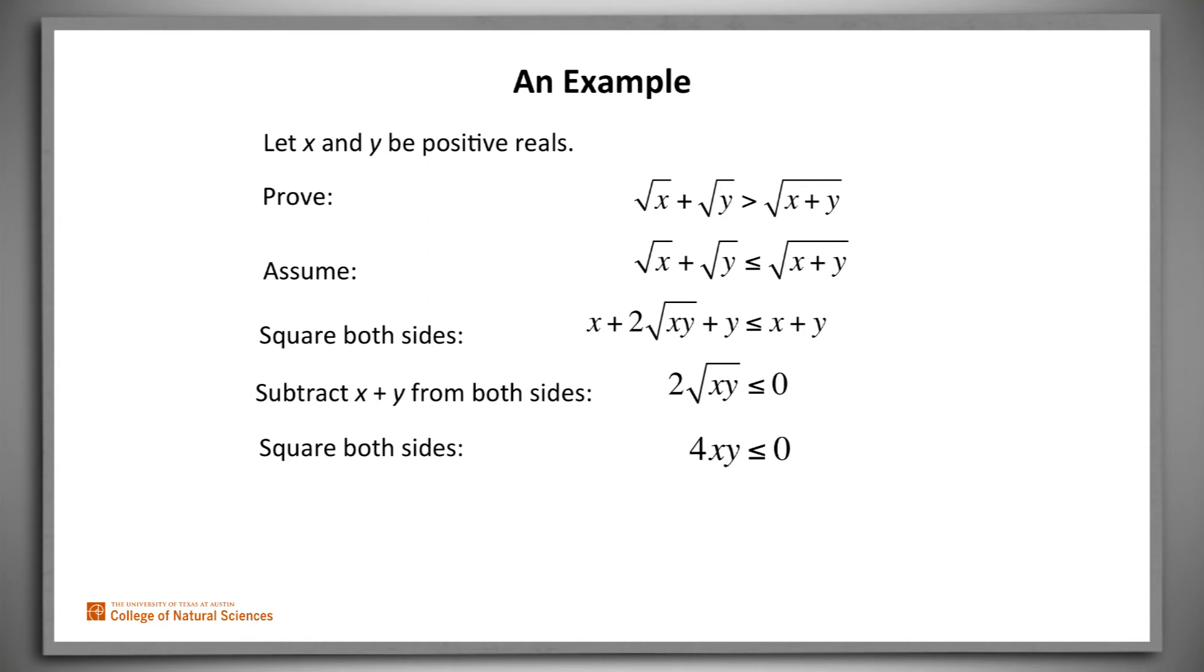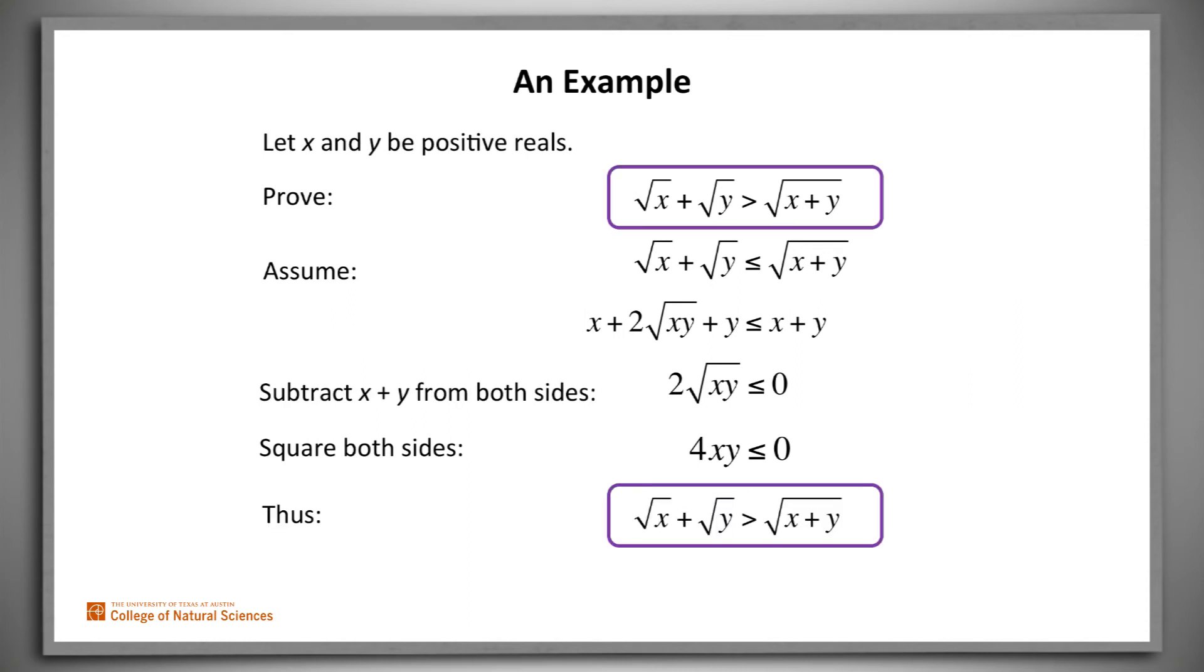But we note that in order for that to be true, at least one of x or y would have to be less than or equal to zero. But that contradicts our initial claim that both of them are positive. So our assumption that our desired claim is false must be false. And we've proved our claim.